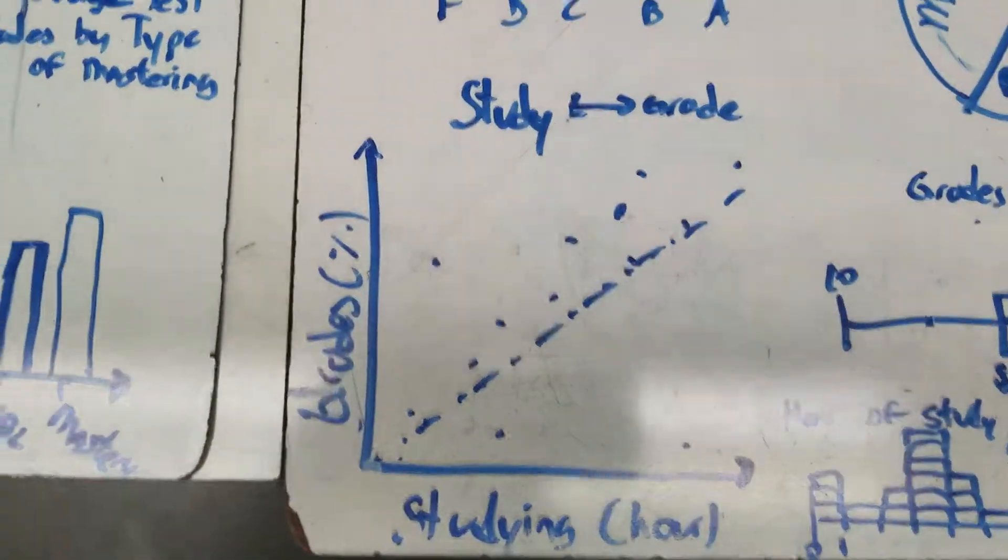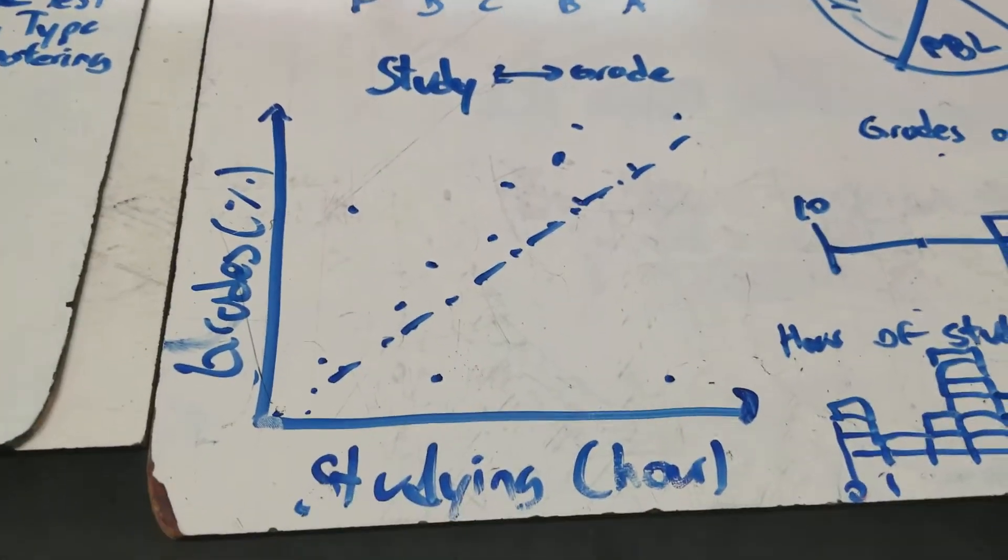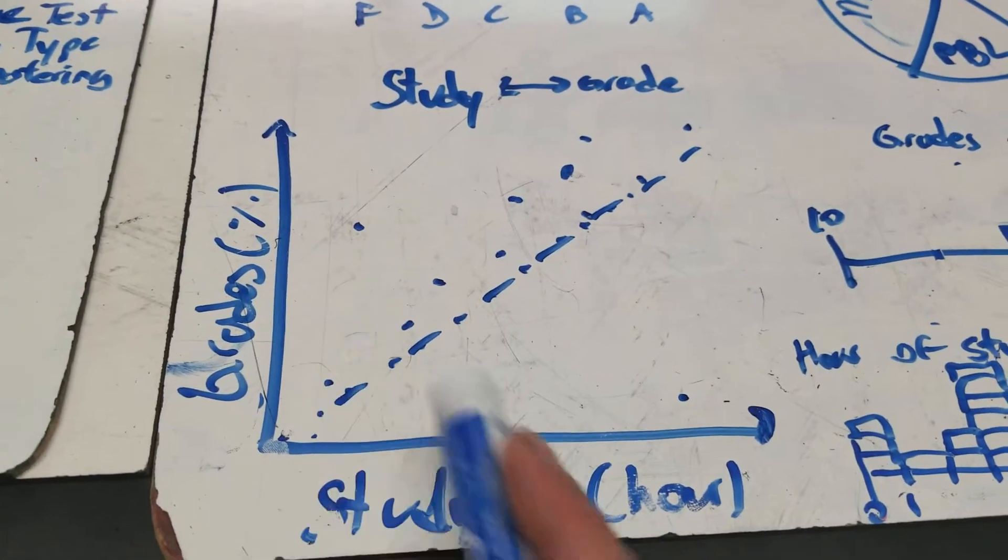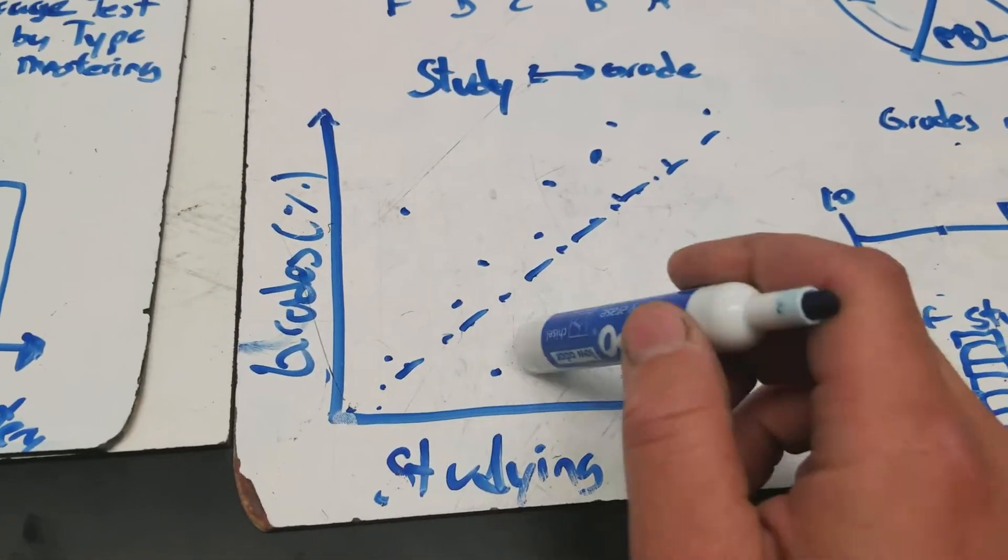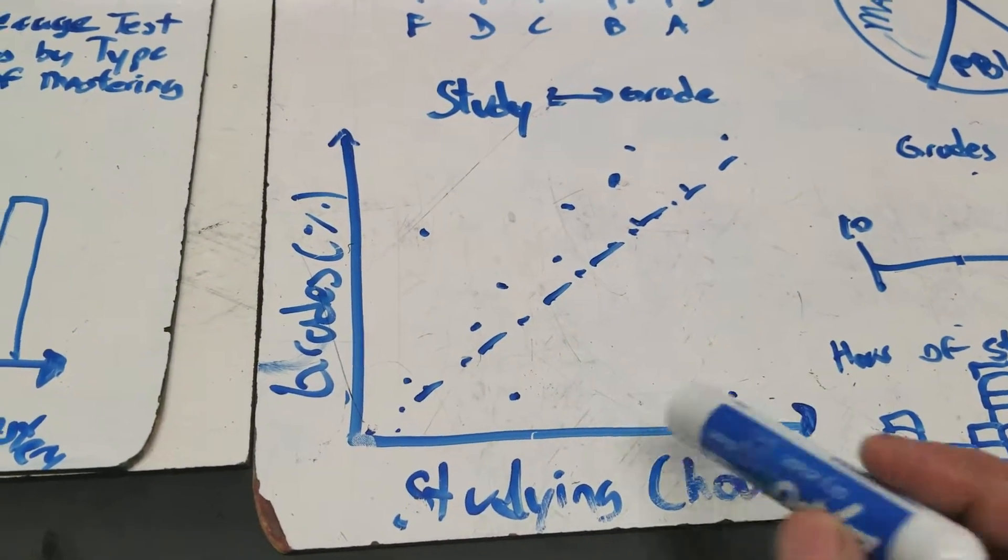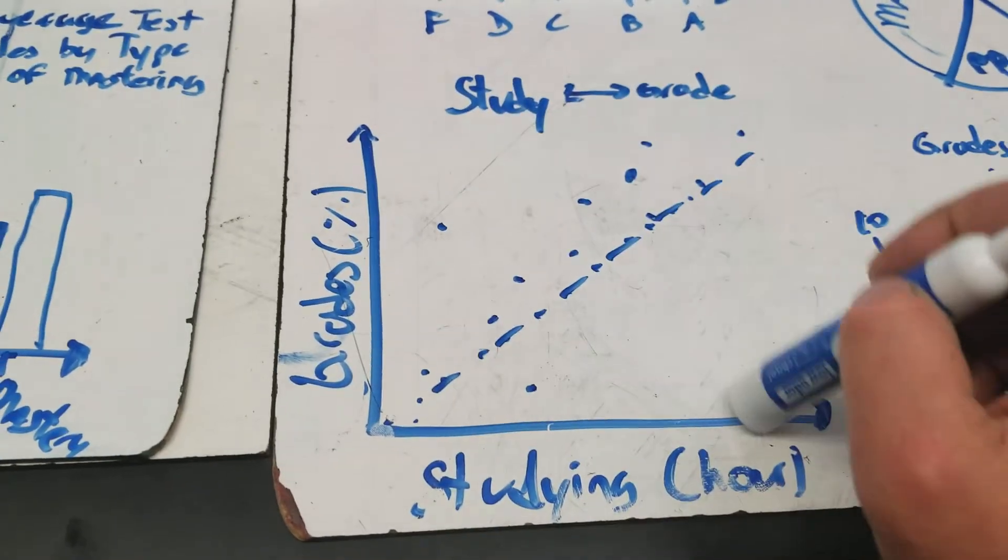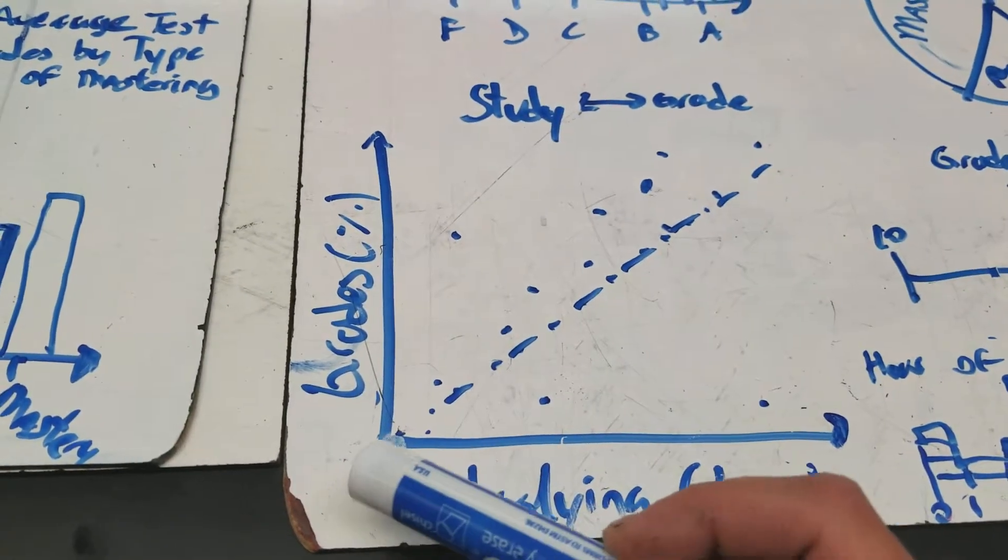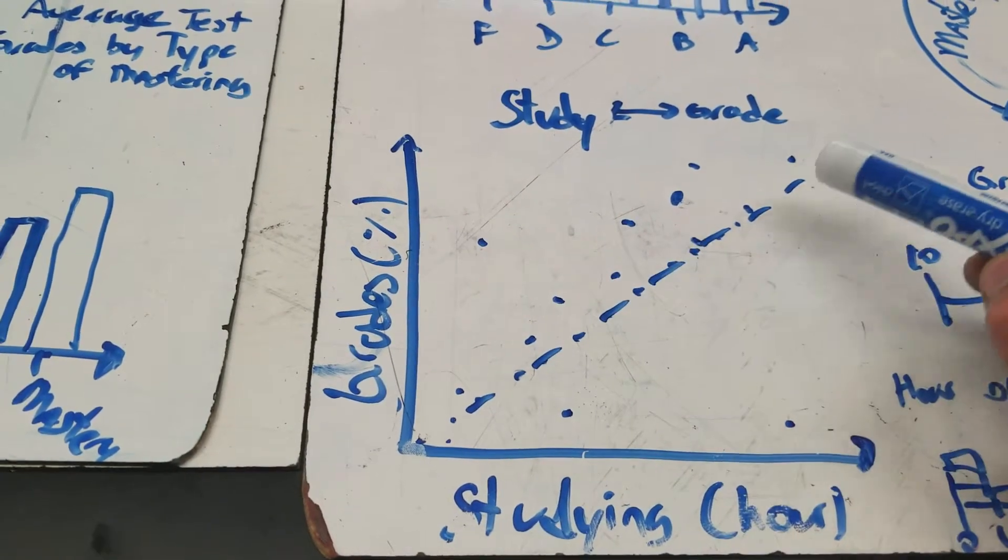You also can see a lot in science classes these scatter plots. So scatter plots is when you collect data on two different things. For example, this is studying data, and this is the grades. So you can see that each of these points represents one data point. Now, some data falls close to the pattern, but some data could be outside the pattern, right? And then you can create a line of best fit that is a line that closely gets to as many points as you can.